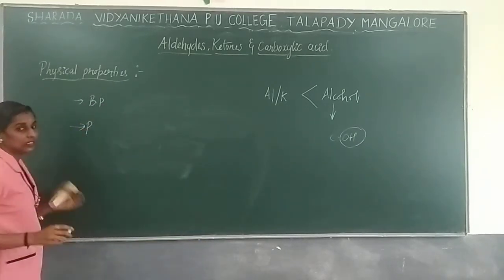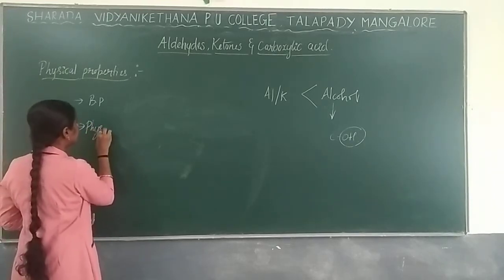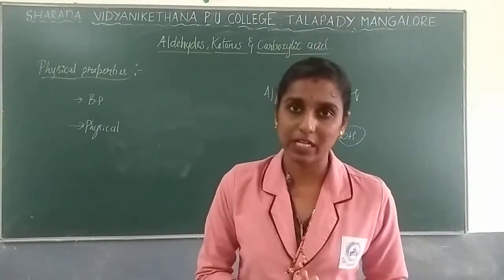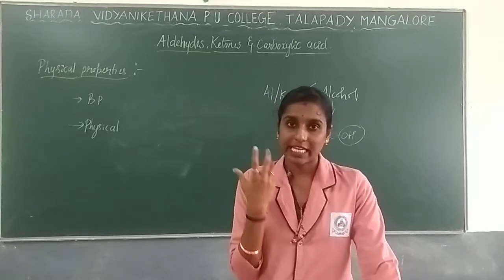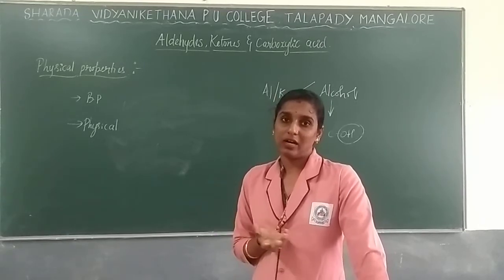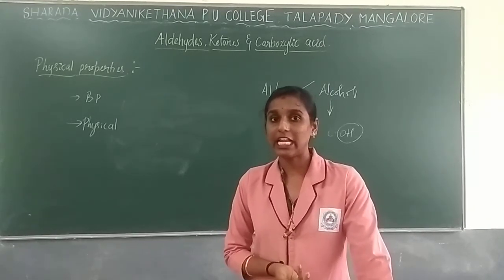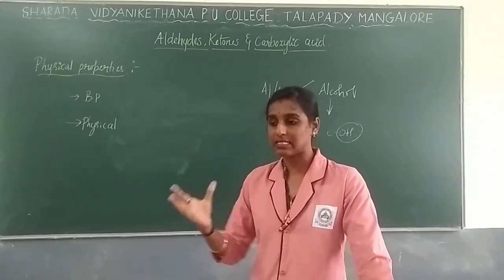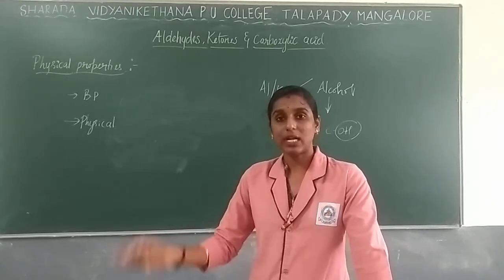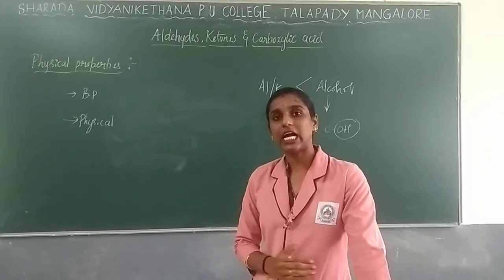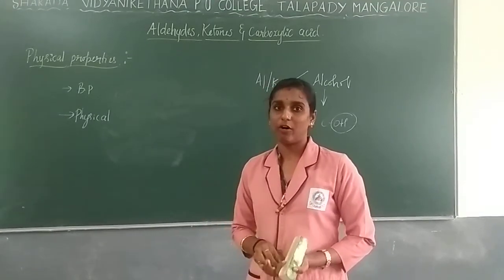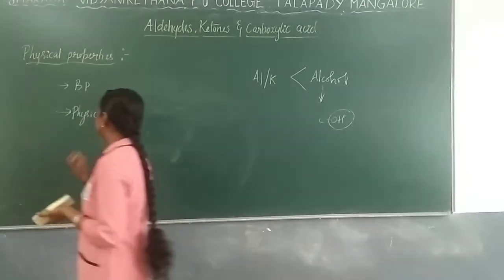The second property is physical state. Lower aldehydes like methanal are in gaseous form. Ethanal and acetone (a ketone) are in liquid form — specifically volatile liquids. Volatile liquid means if you open and keep that liquid it will evaporate quickly. Higher aldehydes and ketones exist in either solid or liquid form.